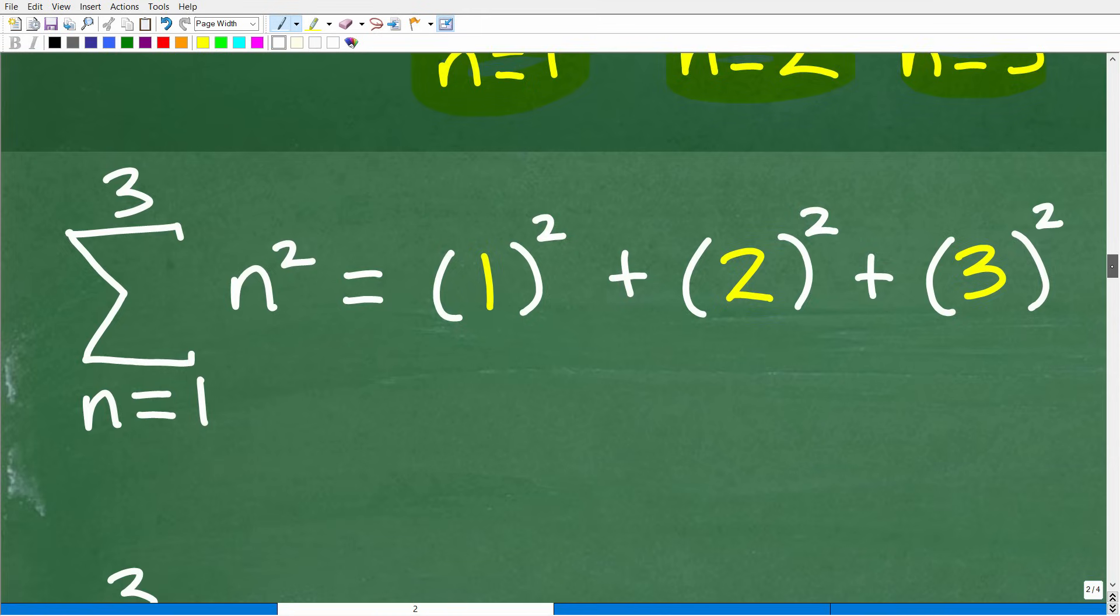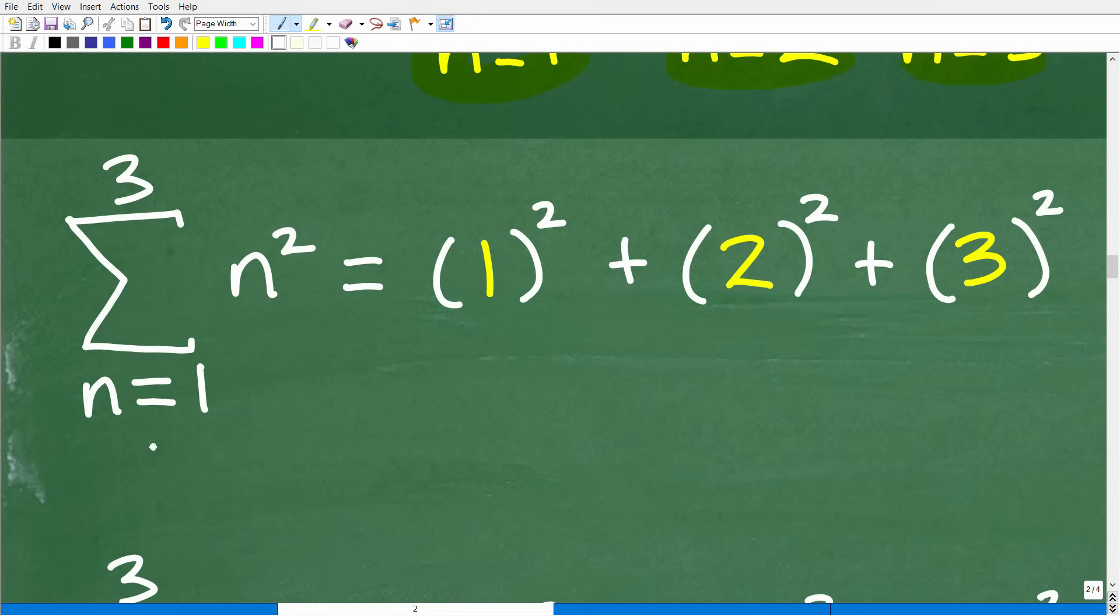Okay. So let's go ahead and do that. So basically here is what this Sigma notation means. So we're going to add up the sum of N is equal to one, two, three N squared. So we start off with one squared plus two squared plus three squared.